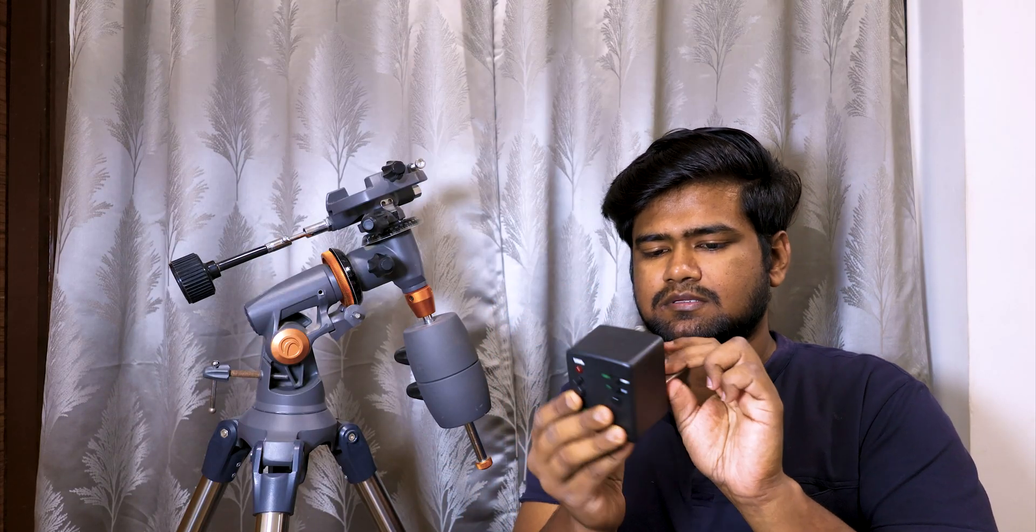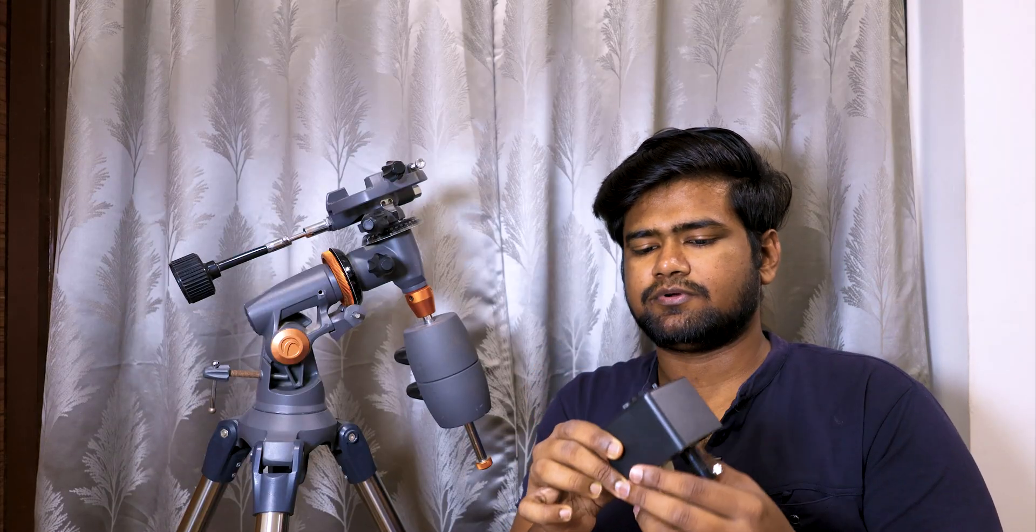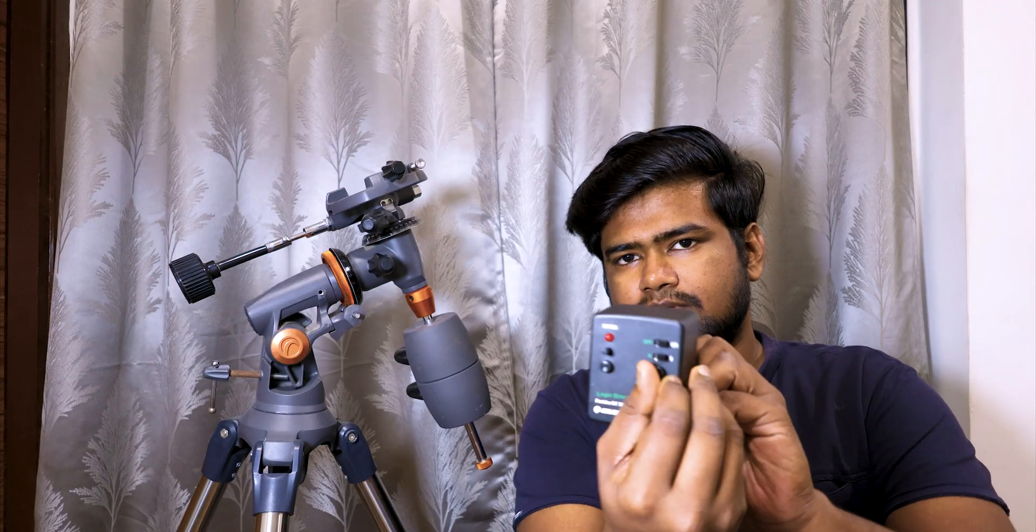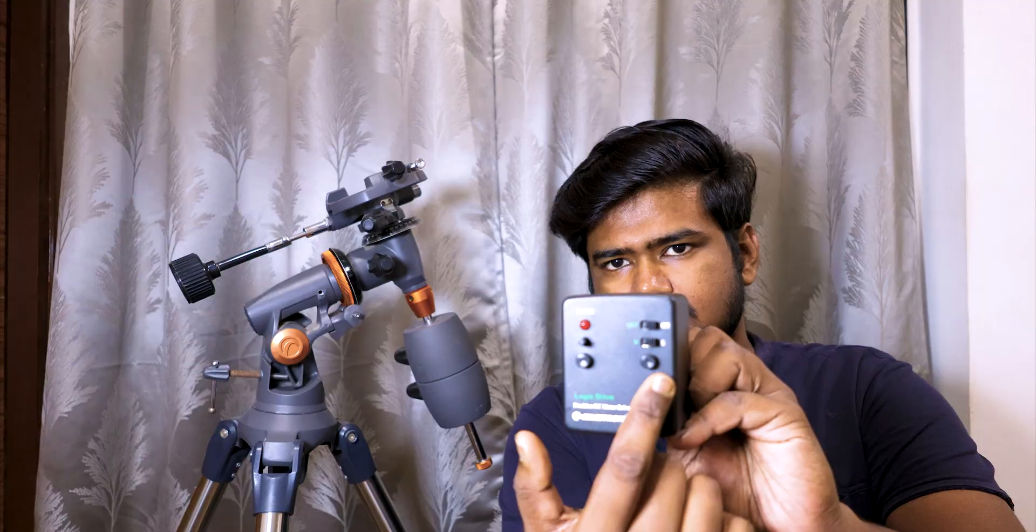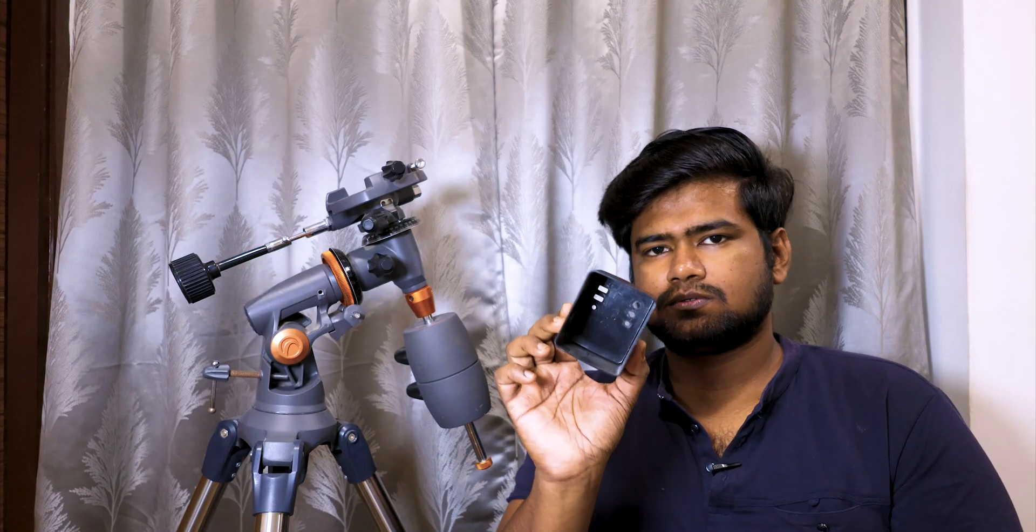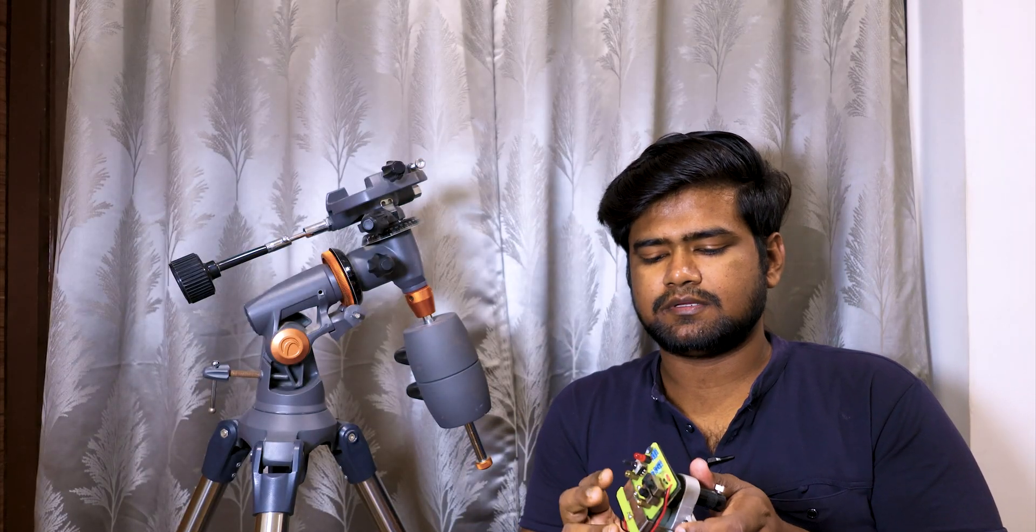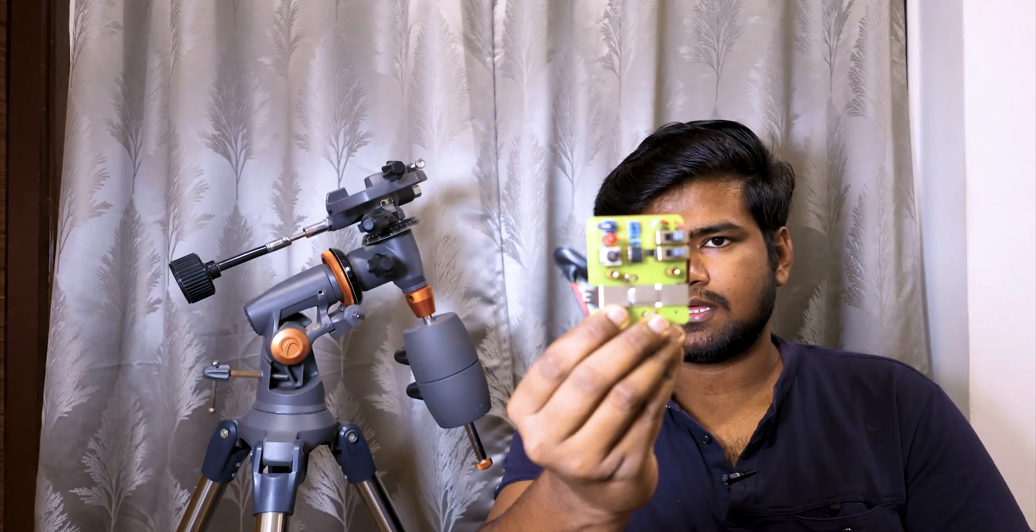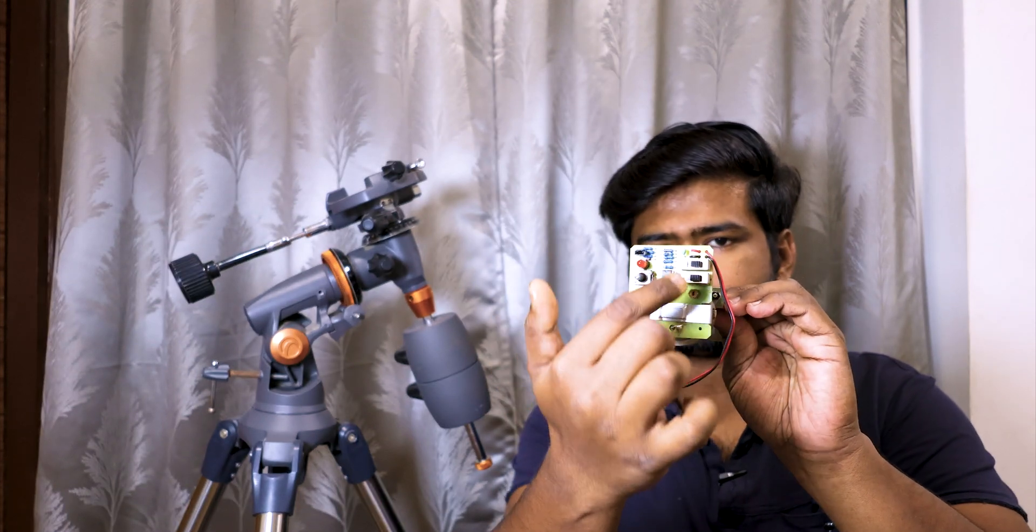Before you attach this here, you need to take out this enclosure, or you can say the cover of this particular motor drive. For that, you need to take out these two screws. Okay, so this is the particular enclosure that came out, and we are left with this motor bolt and the controls for it on it.